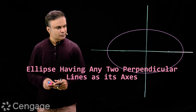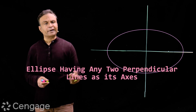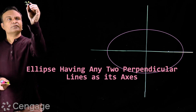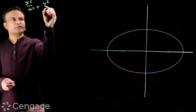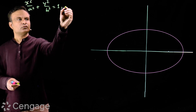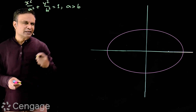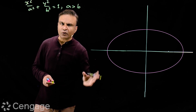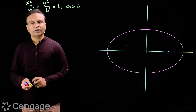Consider this ellipse where the major axis is the x-axis and the minor axis is the y-axis. This equation is given by x² over a² plus y² over b² equals 1, where a is greater than b. This is the standard equation of an ellipse — the simplest form.